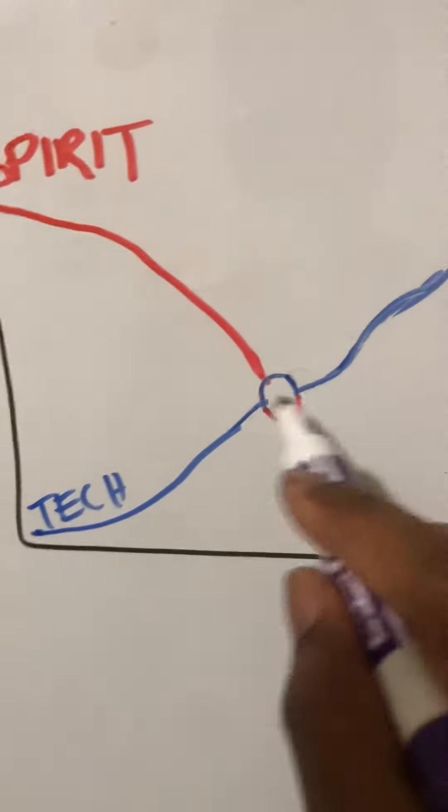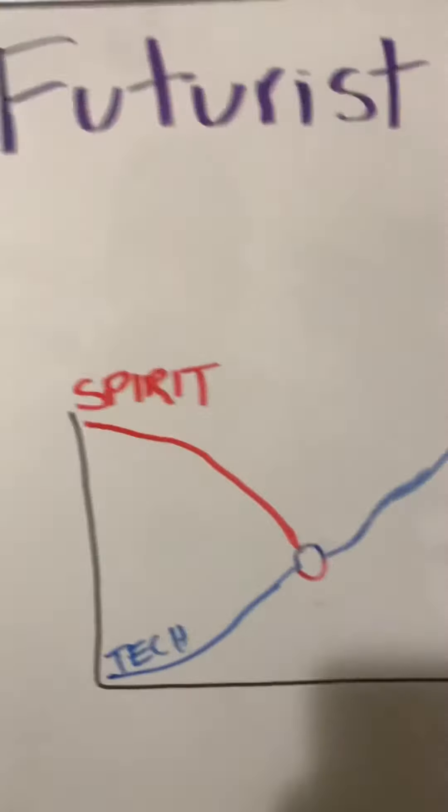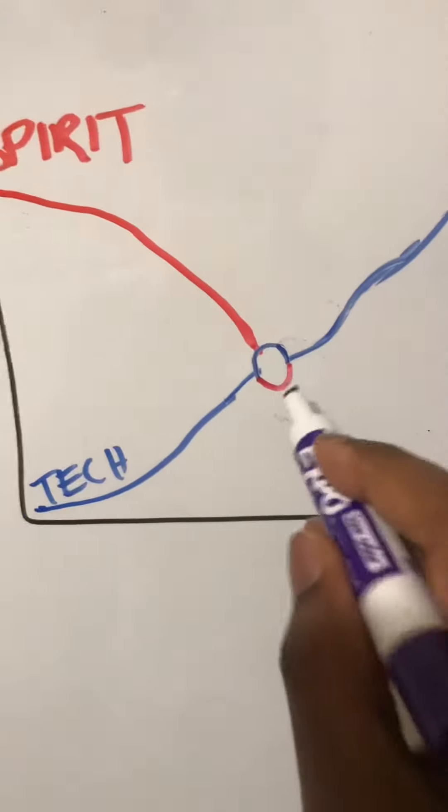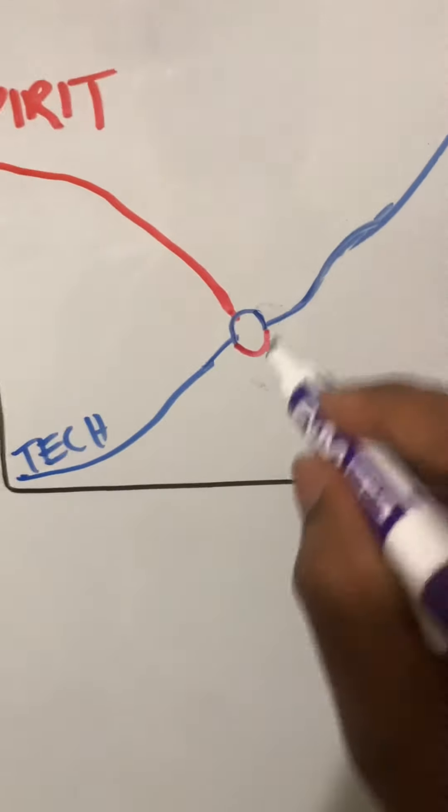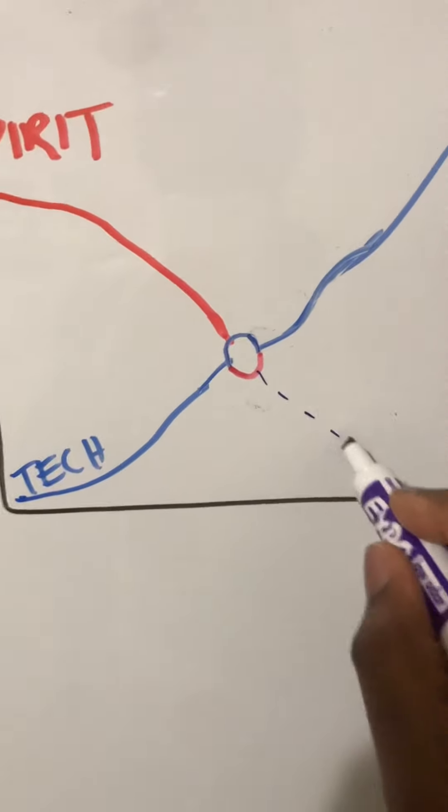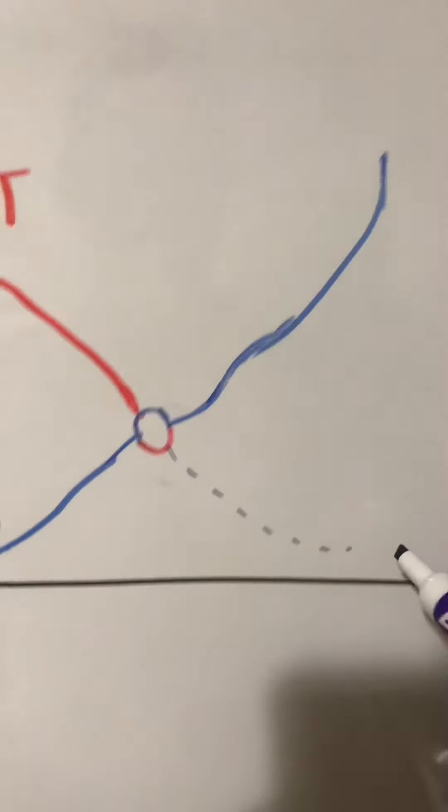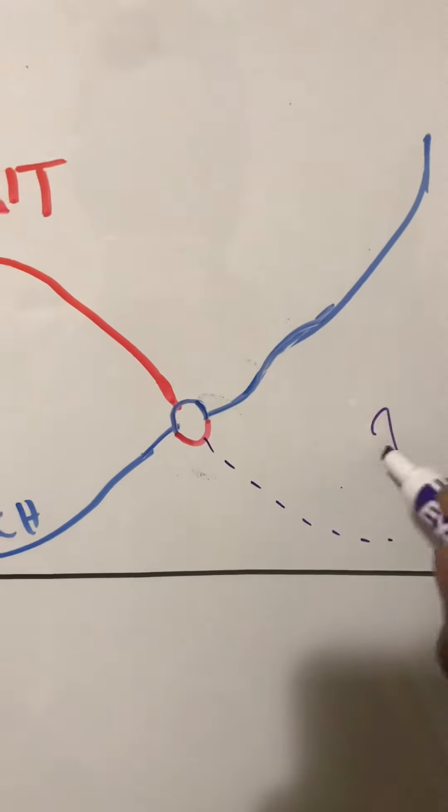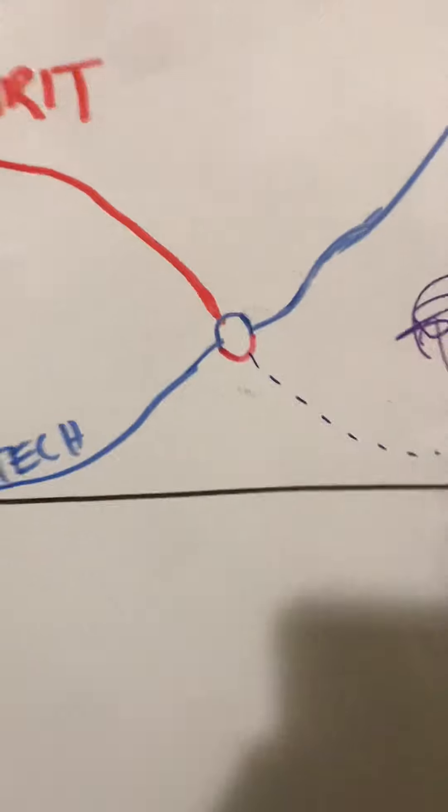We're coming at a juncture point here now, and this is a prediction from a futurist, where it's very important for humanity. Otherwise, if our spirituality continues to decline and technology continues to increase, then we're pretty much going to be on a path of self-destruction.